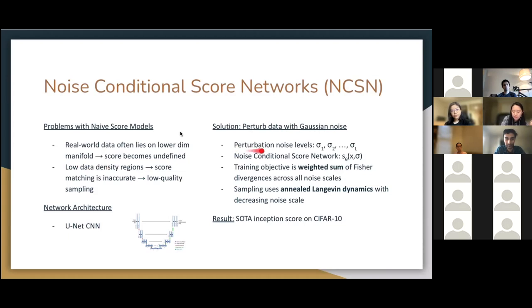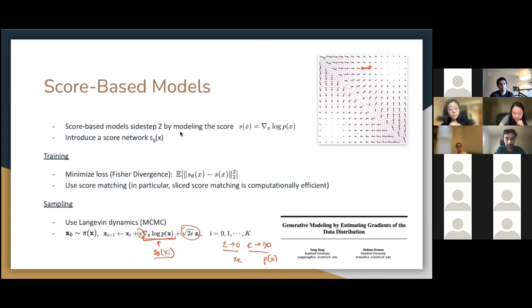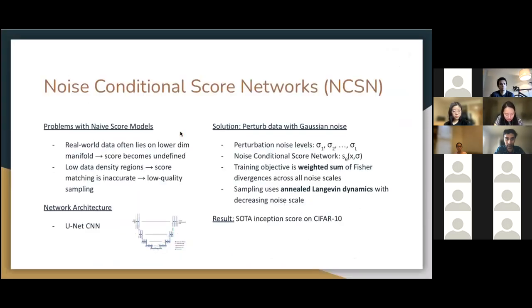So they address this trade-off with taking many different noise levels, sigma 1 up to sigma L. And then they define a noise conditional score network that takes an x and also some arbitrary noise level sigma. And the training objective is now the weighted sum of Fisher divergences across all noise scales. And they also have to modify the sampling process to use annealed Langevin dynamics with decreasing noise scale. Just to clarify exactly what the change is, here instead of s_θ(xi), we also take in the noise term. And so given xi and sigma i, we can obtain our xi+1 and continue with annealed Langevin dynamics. So I just wanted to also mention that the network architecture they chose was a U-Net, and this resulted in state-of-the-art inception score on CIFAR-10.